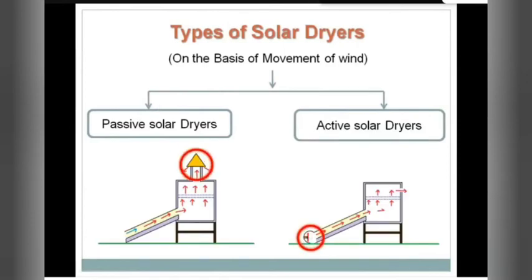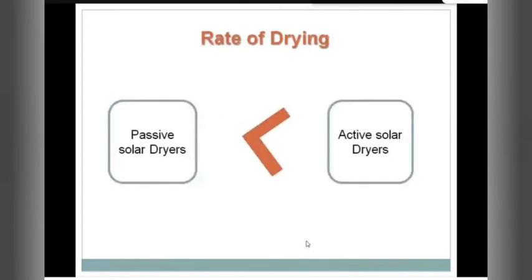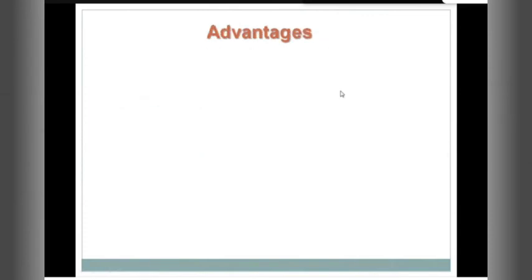In a passive solar dryer, there is a chimney — cold air enters and hot air is expelled through the chimney. In an active solar dryer, there is a fan that forces air from the outside to the inside of the solar chamber. Scientists found that the rate of drying of the active solar dryer was higher than that of the passive solar dryer, because the fans and pumps increase the rate of drying.